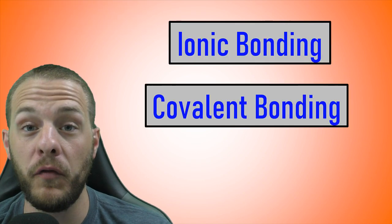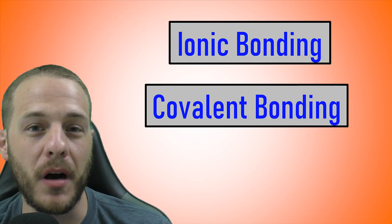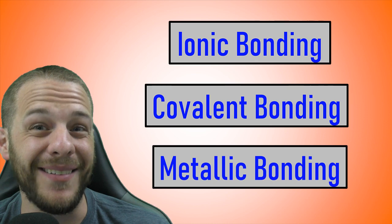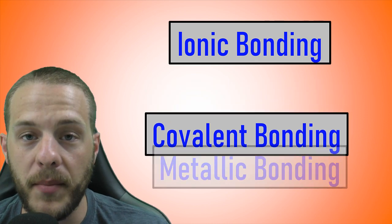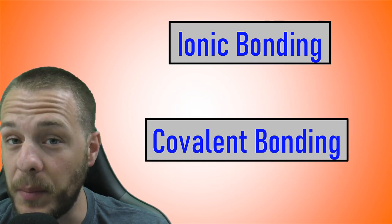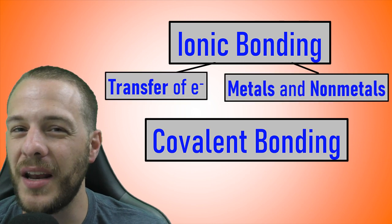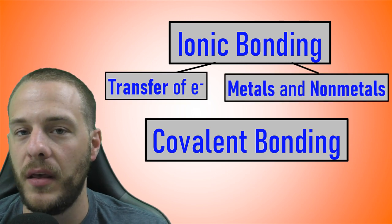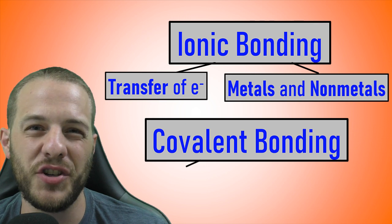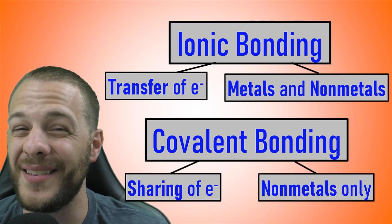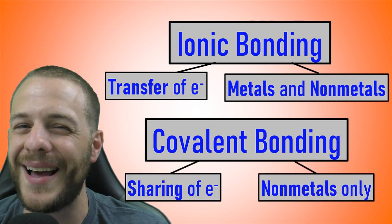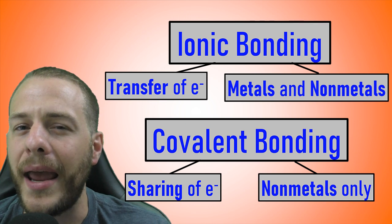By now you've probably heard that chemical bonding is broadly described in three main types, which are ionic bonding, covalent bonding, and the lesser talked about metallic bonding. Early on in our chemistry education, we learned that ionic bonding, which involves the transfer of electrons, occurs between metals and nonmetals, and that covalent bonding, which involves the sharing of electrons, occurs between nonmetals only. But we never really got an explanation as to why.